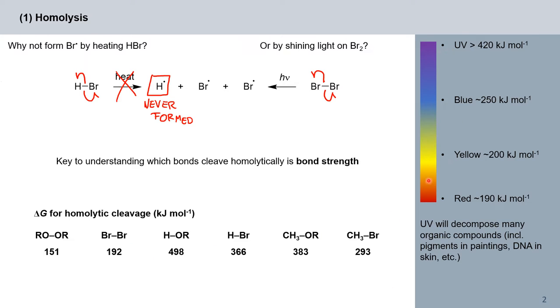Compare this with the visible spectrum: we go from 190 kilojoules per mole for red light all the way to around 420 kilojoules per mole for UV. You see that our oxygen-oxygen and bromine-bromine bonds can be cleaved by heat or light, whereas all these bonds on the right are too strong to be cleaved by heat or light.